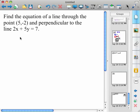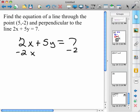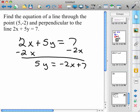So to start with, we'll go ahead and solve for y to put it in slope intercept form. So I'll subtract 2x from both sides of the equation. So 5y = -2x + 7. Then I'll divide everything by 5.